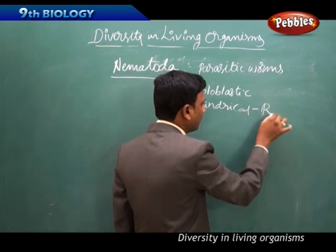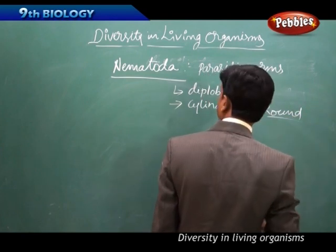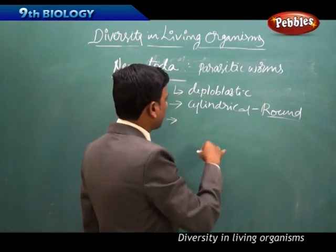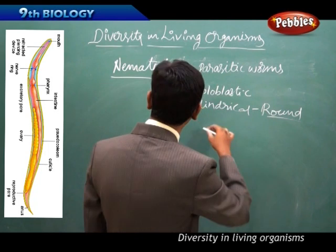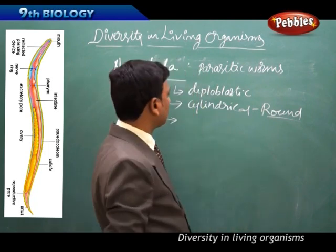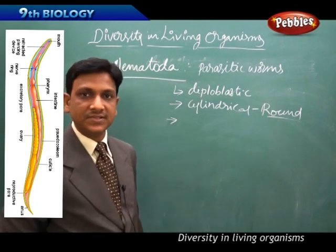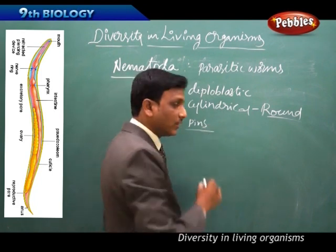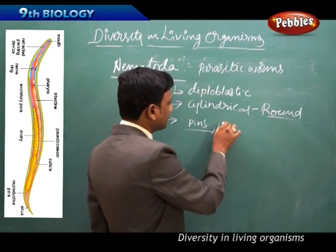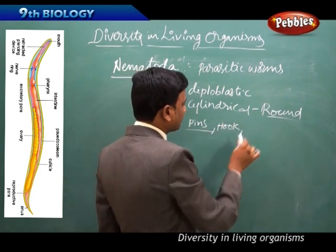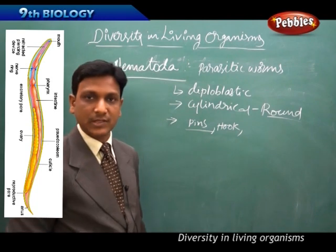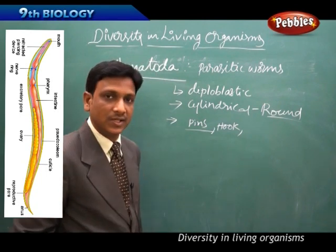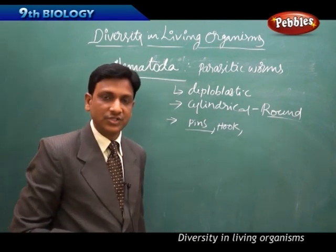Nematoda worms are round and cylindrical, which is why they are called roundworms. They have a pseudo-coelomic cavity and special structures like pins, hooks, and sucker-like structures at the ends of their bodies — similar to the sucker found in tapeworms.